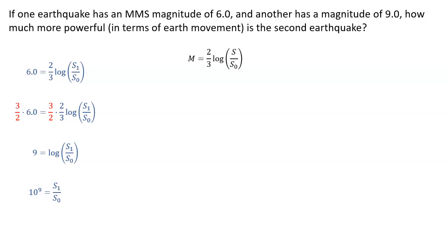And then multiply by s0 to get s1 equals s0 times 10 to the 9th. In other words, this earthquake has 10 to the 9th times more earth movement than the baseline. And so there we have our first earthquake, and now we're going to repeat this process for the second.